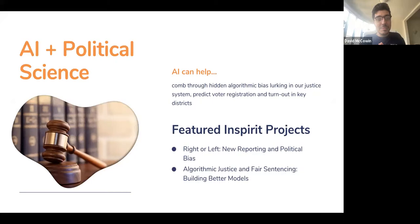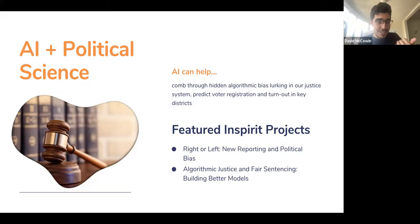AI and political science is a nice one because it's another one people don't really expect. It can detect bias in our current judicial or legal system, predict voter turnout — important if you're a political consultant trying to support a candidate — and can also be useful in detecting bias in media outlets, trying to make sure we live in a fair and well-informed world.